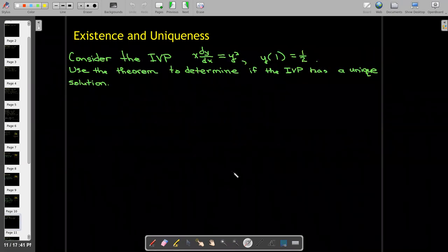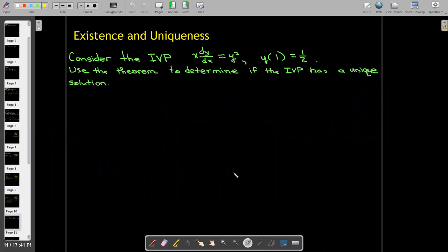So let's look at an example that might make more sense. We're going to look at this initial value problem: x(dy/dx) = y², and we want y(1) to equal 1/2.